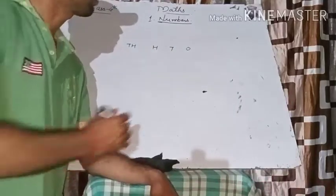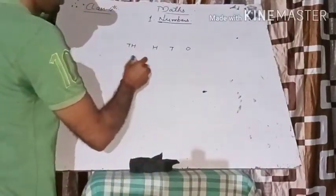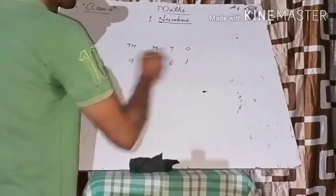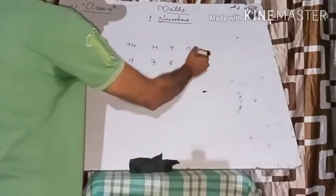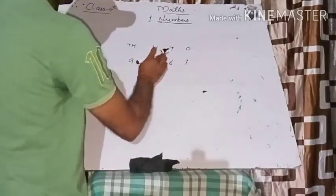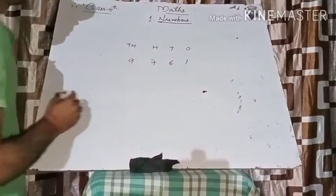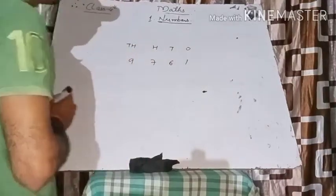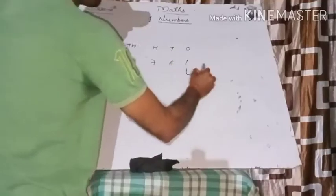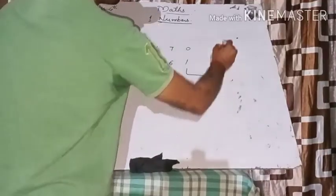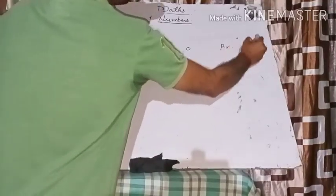In this chapter we will look at the place value chart. Here I am taking one example. You can see ones, tens, hundreds, and thousands — this is your place value, and this is your face value.